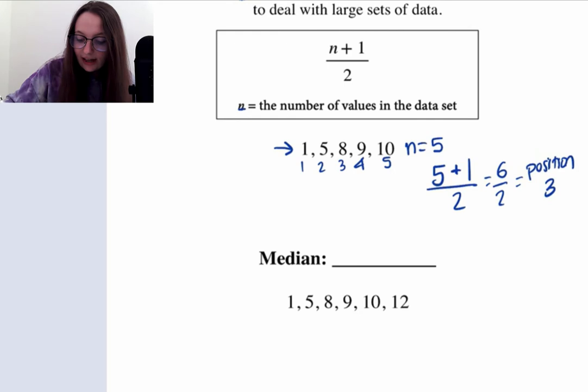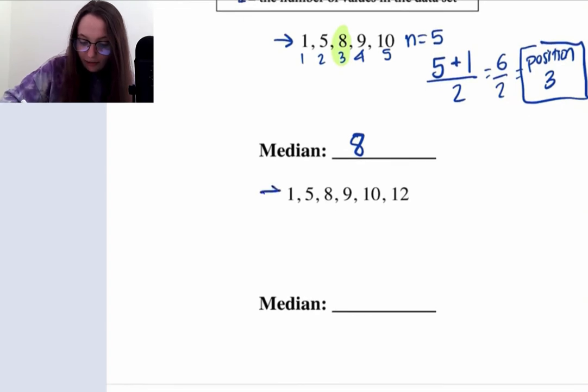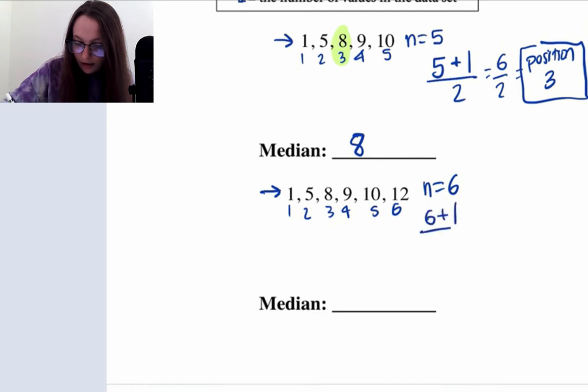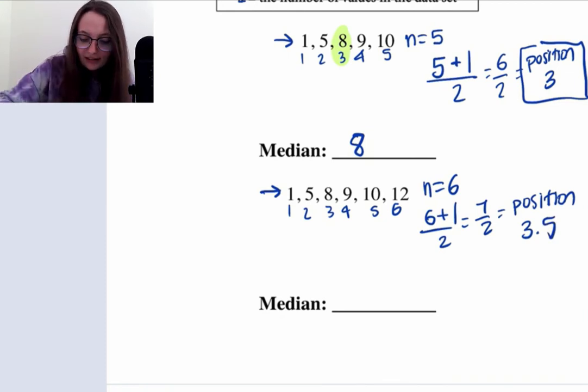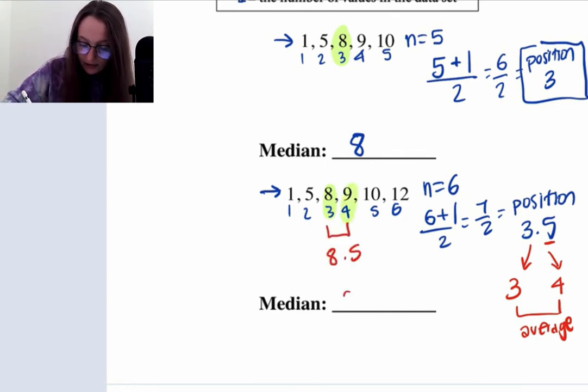We're going to plug in five plus one over two, which gives us six over two, which tells us that the median falls at position three. We got to be really careful here. It's not that they're telling us that the median is three. They're telling us that it falls at position three. Position three we can see is eight. When we look at this other data set, there are six values here. n is equal to six. We get six plus one over two, which is equal to seven over two, which gives us position 3.5. The 0.5 here tells us that we have to look at position three and position four and take their average. Position three is eight, position four is nine. So when we take their average, that gives us 8.5 as the median.